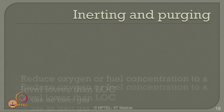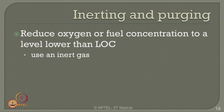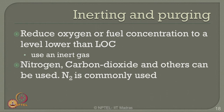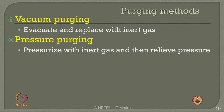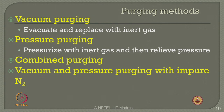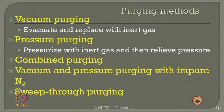Inerting and purging is a process by which oxygen content or fuel concentration is reduced to a level lower than the limiting oxygen concentration. To do this, one generally uses an inert gas. Nitrogen, carbon dioxide, and others can be commonly used, but nitrogen is most popularly used. The commonly used control point is 4 percent below the limiting oxygen concentration. Different purging methods include vacuum purging, pressure purging, combined vacuum and pressure purging with impure nitrogen, and sweep-through purging.